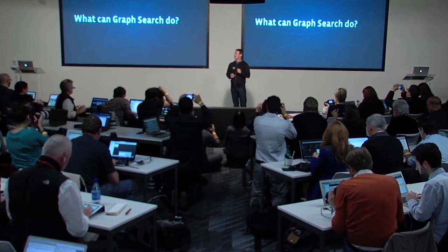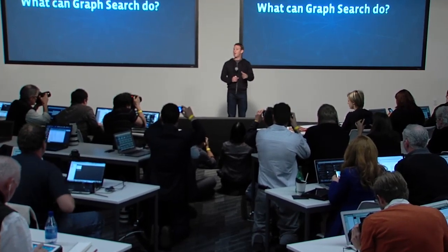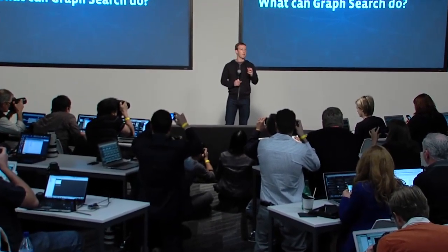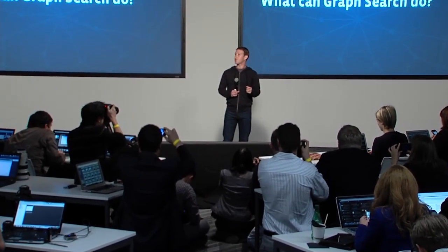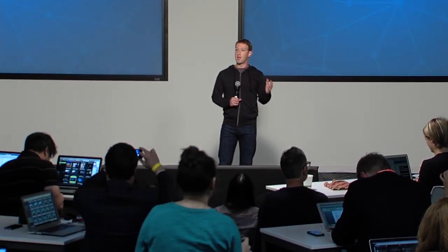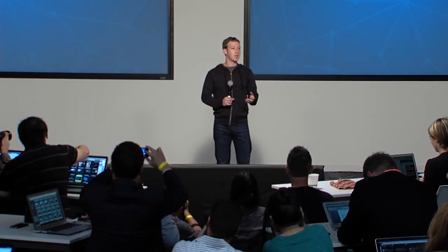This is where I want to emphasize how early we are in the development of Graph Search. The graph is really big and there's a lot of content we want to index. But for this first beta version of Graph Search, we focused primarily on four different use cases: people, photos, places, and interests. There's a lot more, but these cases are really useful and we built something we're really proud of.